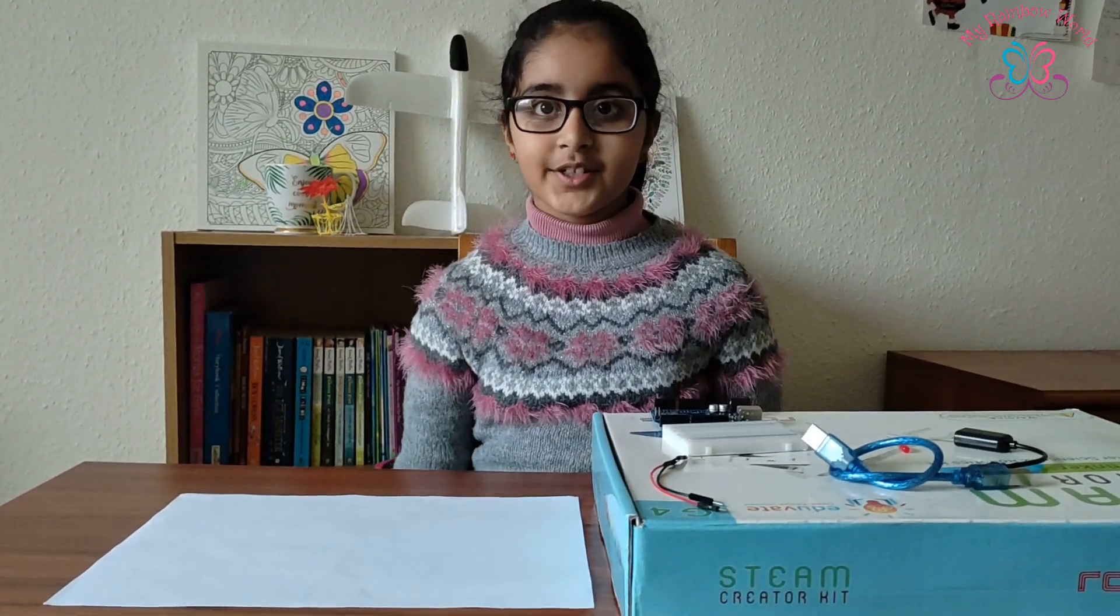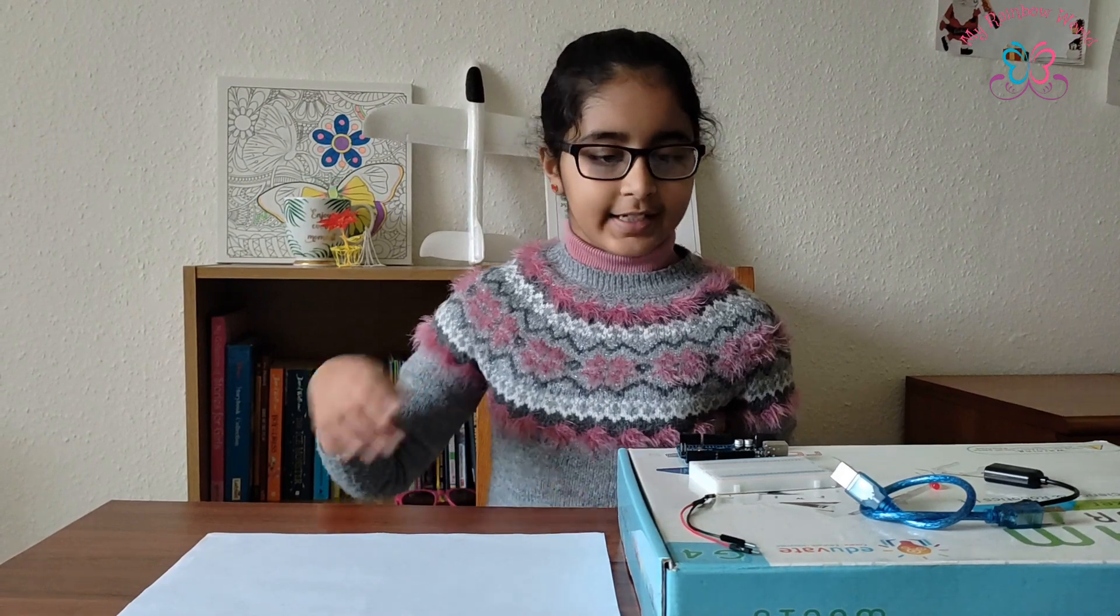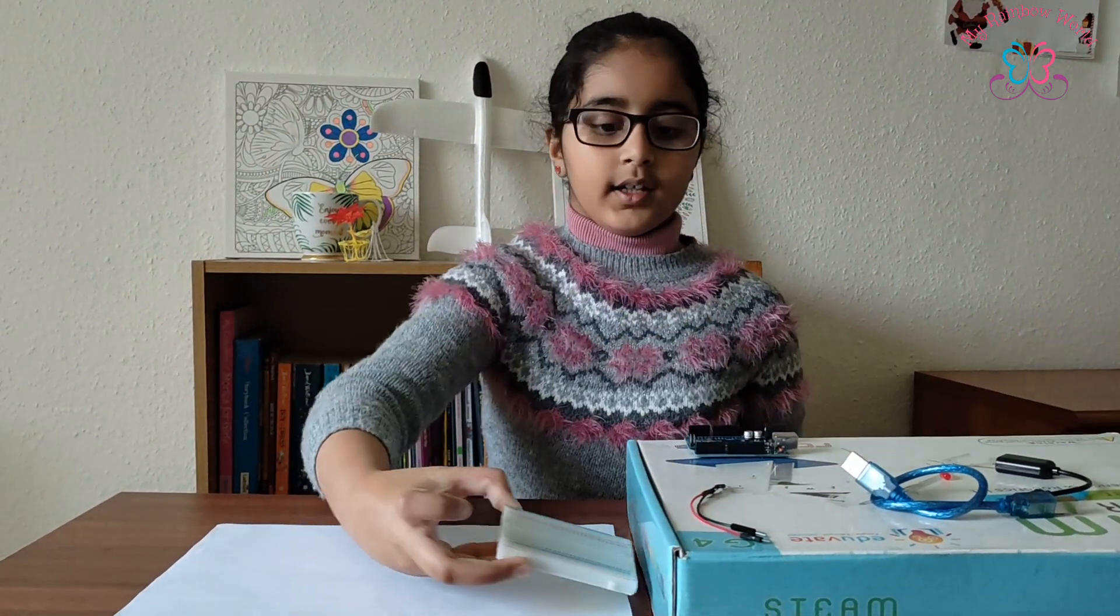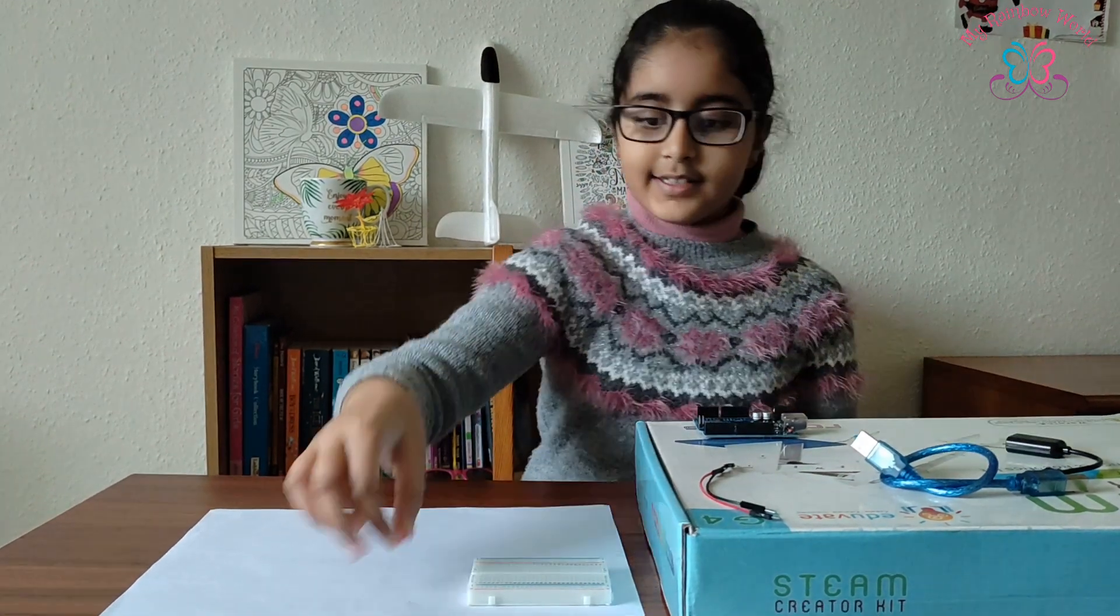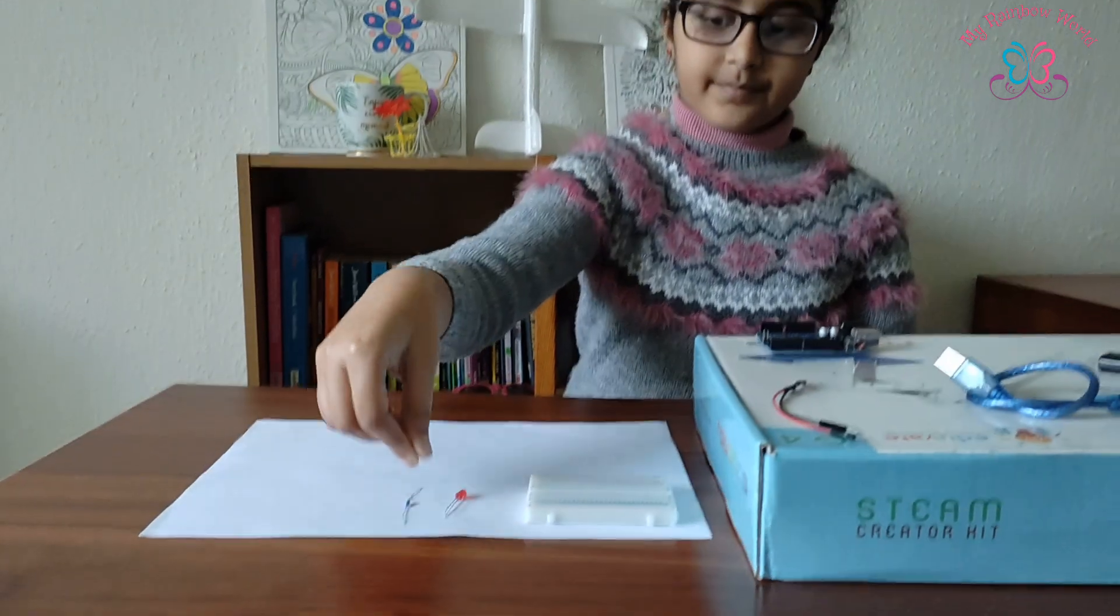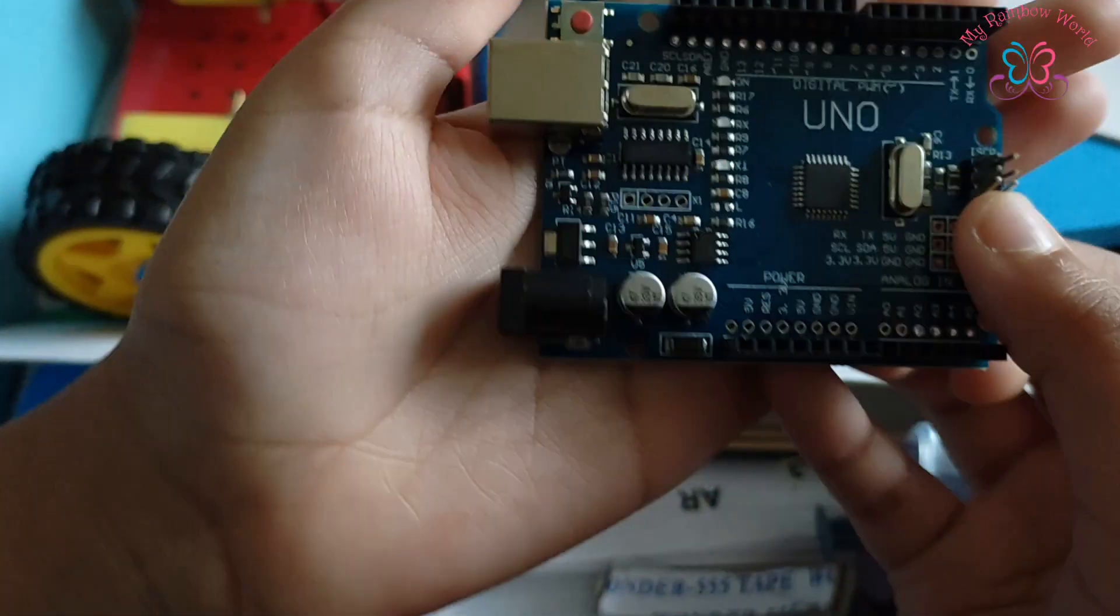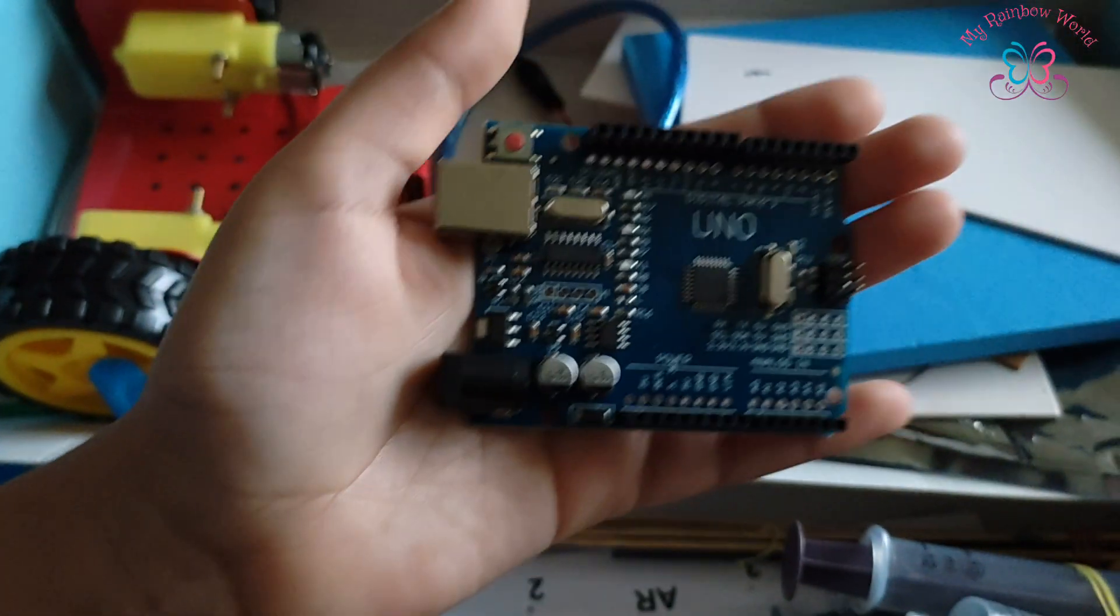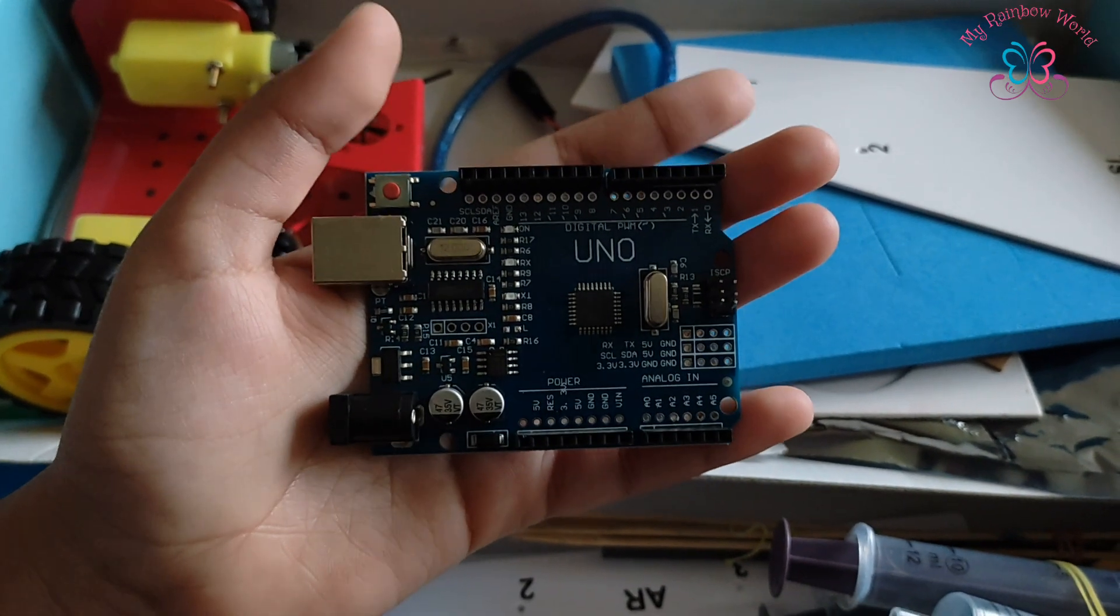Today I'm going to make an LED light blink. The materials you need are a breadboard, LED light, resistor, and Arduino Uno. An Arduino is the brain of the computer and it's also a small computer on a chip.